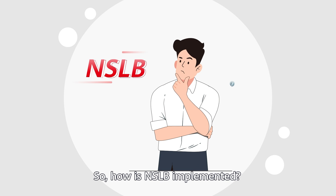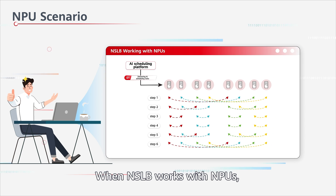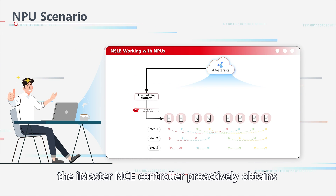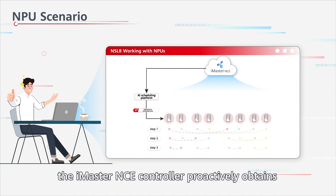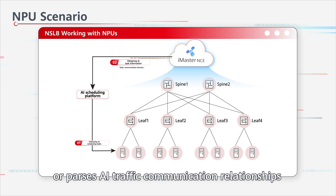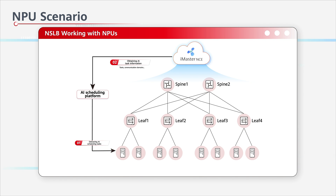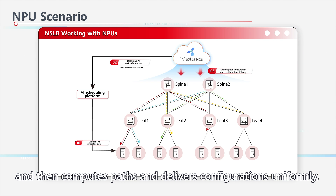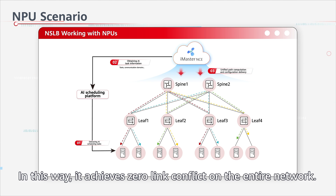So, how is NSLB implemented? When NSLB works with NPUs, the iMaster NCE controller proactively obtains or parses AI traffic communication relationships from a global perspective and then computes paths and delivers configurations uniformly. In this way, it achieves zero link conflict in the entire network.